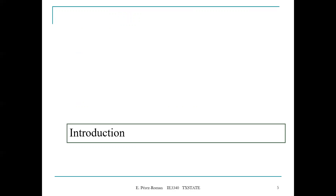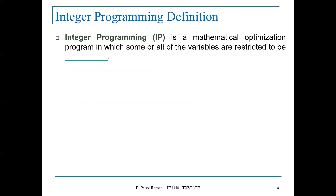Let's look at the introduction. We are going to use an example to illustrate the need for integer programming models. The definition of integer programming: it is a mathematical optimization program in which some or all of the variables are restricted to be integers. So now we are going to force our decision variables to be integers — that's the major difference compared to the linear programming models we've been solving for the majority of the semester.